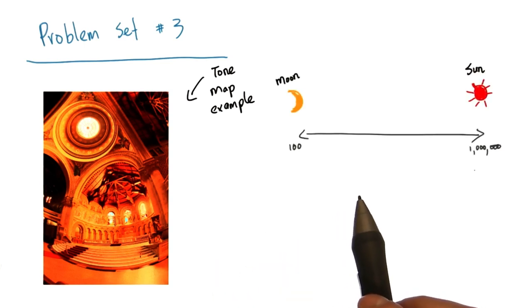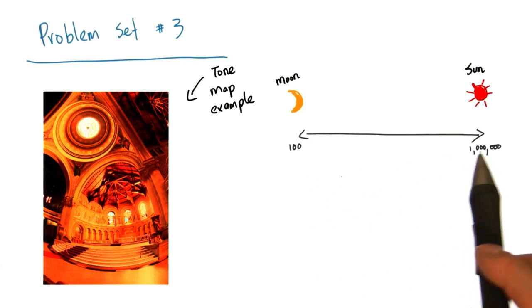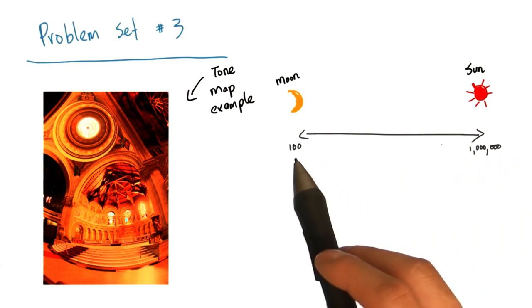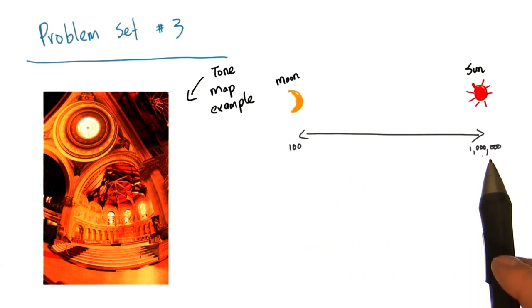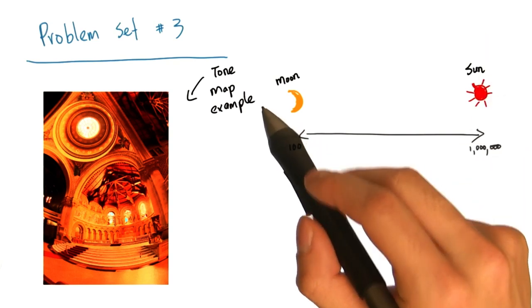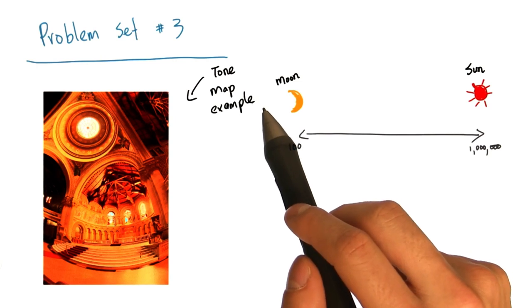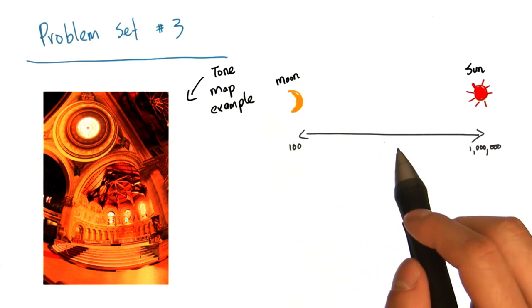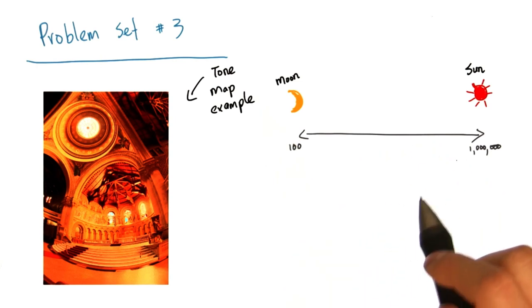This is an important operation because the real world has an enormous range of different brightness values. For example, think of this spectrum as the range of brightness values in the real world. On one end of the spectrum, we have a bright sunny day. On the other end of the spectrum, we have a very dark moonlit night, and it turns out that the bright sunny day is about a million times brighter than the night.